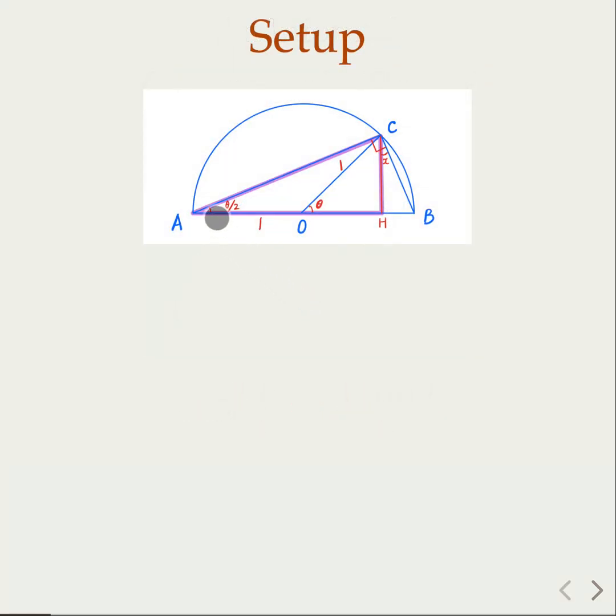So from this highlighted triangle here, this is the right triangle. By definition, this angle is theta over 2. This interior angle is twice that, that is theta. So we have sine θ/2 is going to be CH over AC, and cosine is going to be AH over AC. That's just by the definition of sine and cosine.